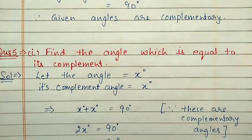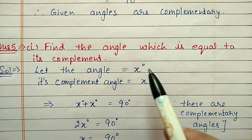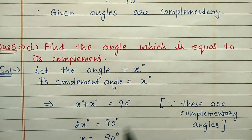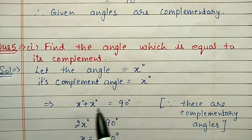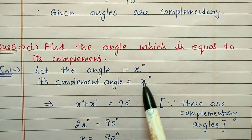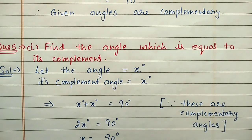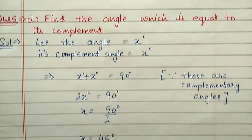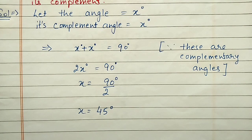Question number five, first part: find the angle which is equal to its complement. Let the first angle be x degrees and its complementary also x degrees since both angles are equal. Using the property of complementary angles, x plus x equals 90 degrees. So 2x equals 90 degrees, and shifting 2 to the other side for division, x equals 45 degrees. Each angle is 45 degrees.